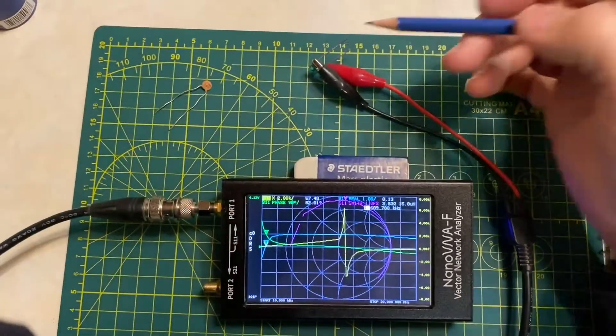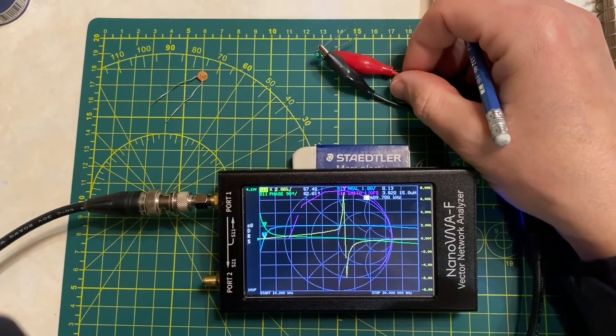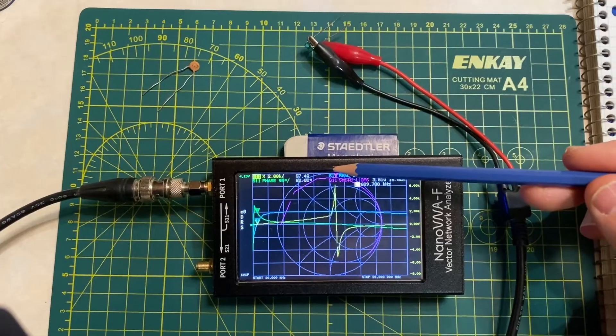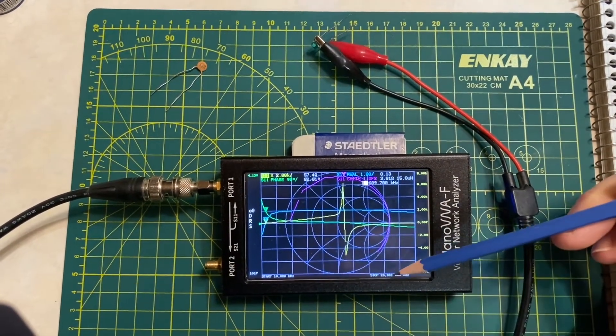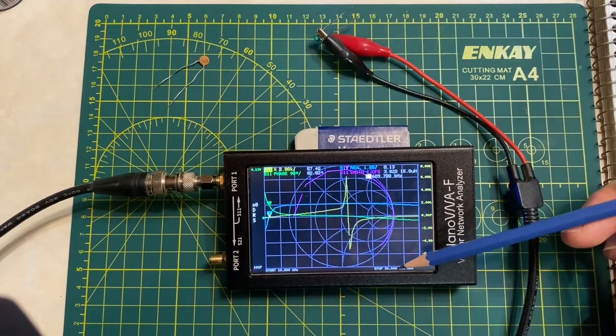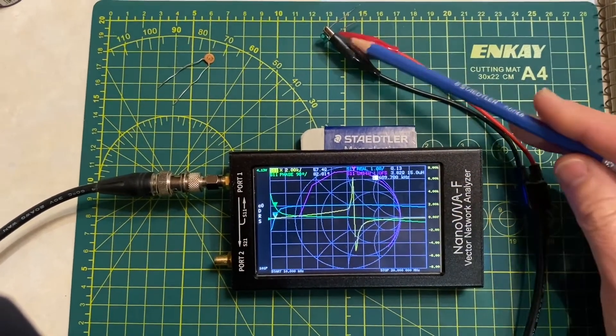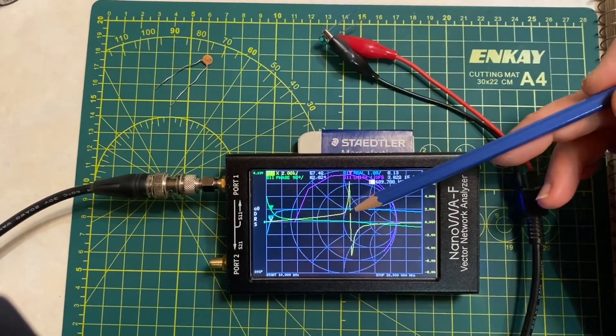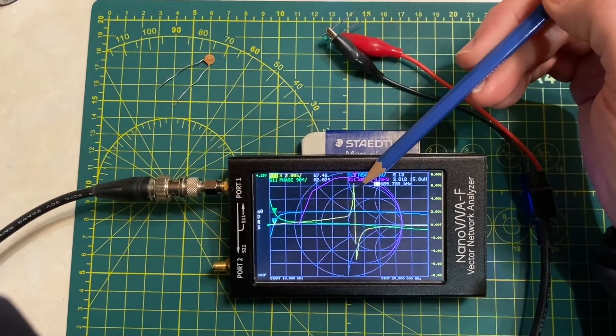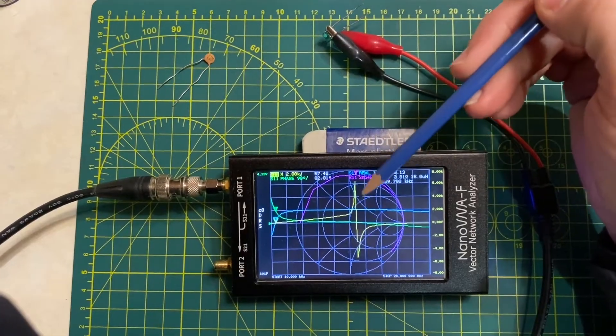I've gone ahead and hooked the inductor back up to the alligator leads here. The thing with calibrating the Nano VNA is you kind of have to have an idea of what range of frequencies you want to test in. I've calibrated this from 10 kilohertz up to 20 megahertz, and you can see that's plenty enough frequency range to take a look at this inductor—actually, it's probably too much.